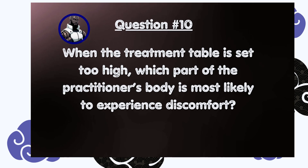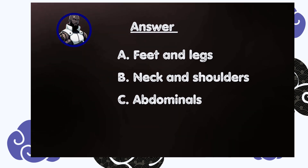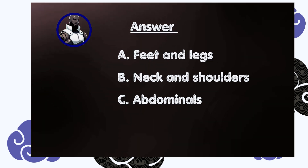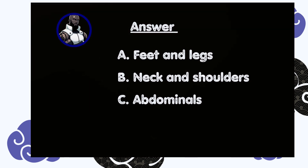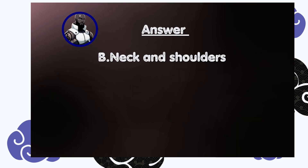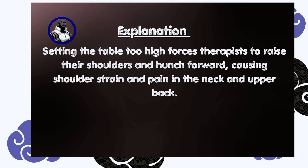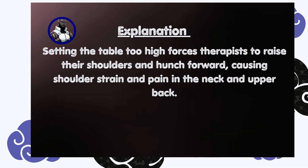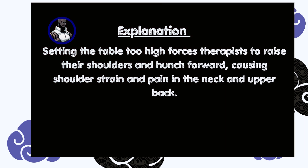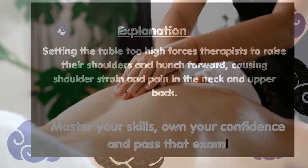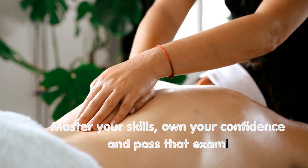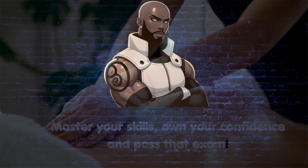Question number ten: when the treatment table is set too high, which part of the practitioner's body is most likely to experience discomfort? A) Feet and legs, B) Neck and shoulders, C) Abdominals. Answer is B, neck and shoulders. Setting the table too high forces therapists to raise their shoulders and hunch forward, causing shoulder strain and pain in the neck and upper back. Master your skills, own your confidence, and pass that exam.